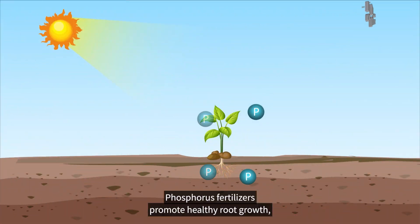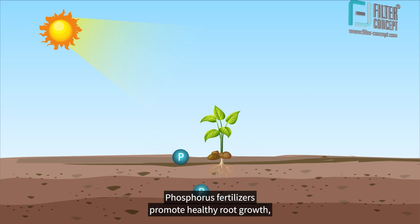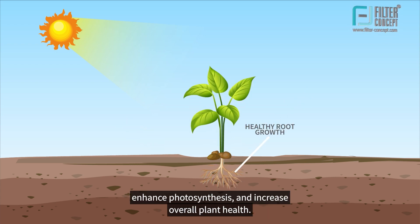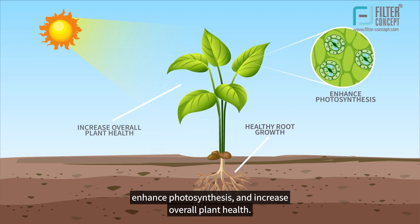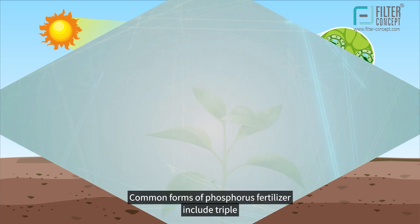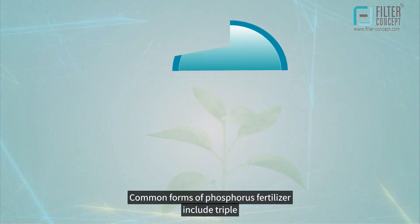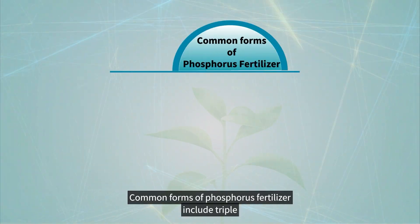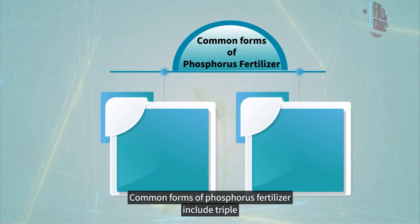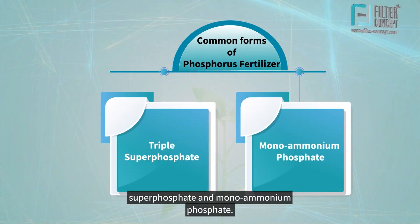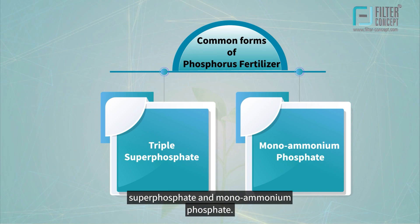Phosphorus fertilizers promote healthy root growth, enhance photosynthesis, and increase overall plant health. Common forms of phosphorus fertilizer include triple superphosphate and monoammonium phosphate.